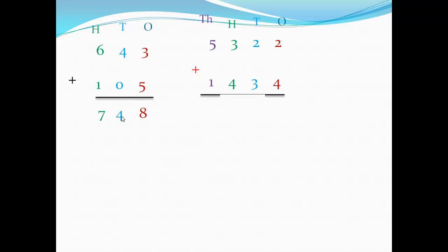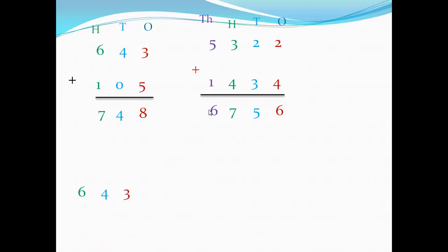For example, 5322 plus 1434 — four digits plus four digits. Same steps: start from ones or units, the first digit on the right. Two and four are in the ones; two and three are in the tens; three and four are in the hundreds; five and one are in the thousands. Two plus four equals six; two plus three — count after three, two — equals five; three plus four equals seven; five plus one equals six.